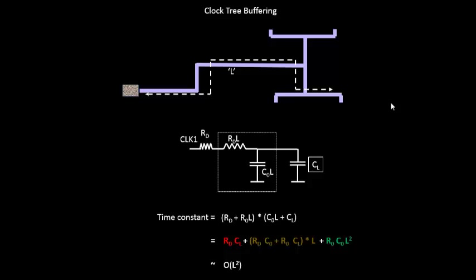Hello everyone. In the last video we came up with an equation that said that the time constant, or the time required for the signal from this end to reach this end, is proportional to L squared. We came up with that particular problem statement. Now let us try to solve this problem.